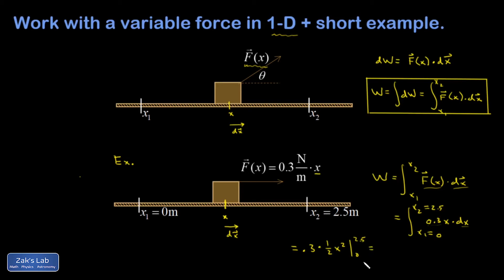And when I plug in that lower limit, I'm going to get zero, so the upper limit is the only one that counts. And I have 0.3 times a half times two and a half squared. And I'll run the numbers real quick.